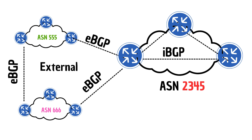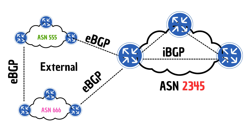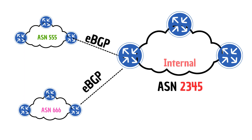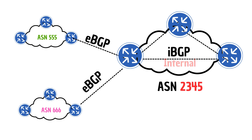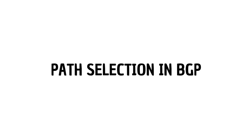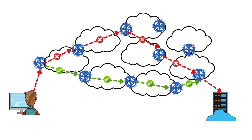BGP has two flavors: external BGP and internal BGP. eBGP, or external BGP, is specifically designed for routing between different autonomous systems. It plays a pivotal role as the core component of the BGP protocol on the internet, facilitating communication between these systems. Internal BGP, or iBGP, is used for routing within the same autonomous system. The need for iBGP typically occurs when multiple routing policies exist or when transit connectivity is provided between autonomous systems.